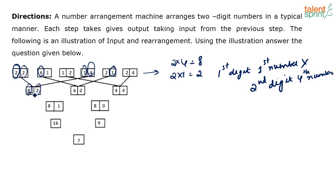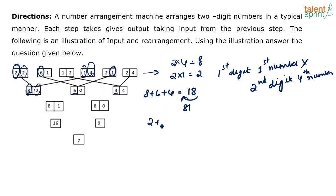Now look at the next step. The pattern in the next step is: add the first digits of all the numbers and write them in reverse. The first digits are 8, 6, and 4. So 8 plus 6 plus 4 equals 18. The reverse of 18 is 81 — that is what they have written here. Similarly, take the second digits in each number: 2 plus 2 plus 4 equals 8, which can be written as 08. When you reverse it, it becomes 80. That is what they have written here.